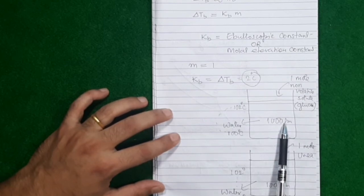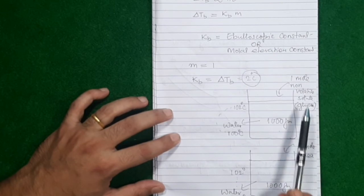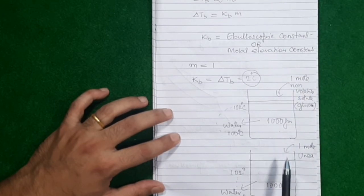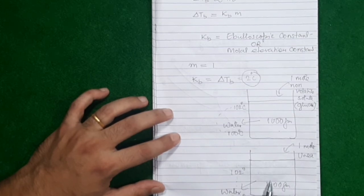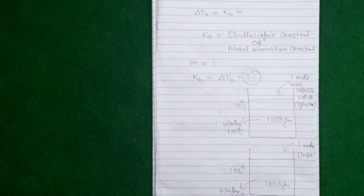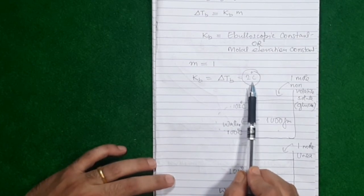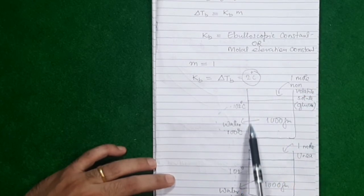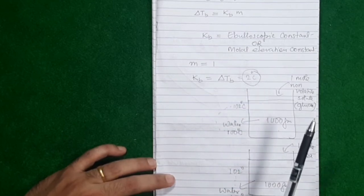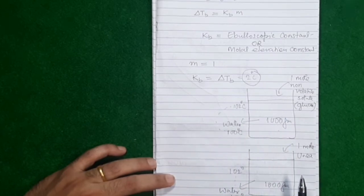What happens to a liquid when you add a certain fixed amount of solute? Whether you add this solute or that solute, it doesn't matter. As long as you add the same number of moles of solute to a liquid, its boiling point will rise and will always rise by the same amount. The ebullioscopic constant is a constant of the liquid — it is a property of the liquid.